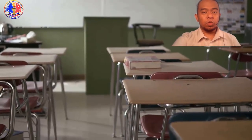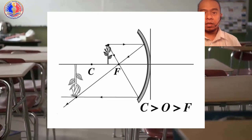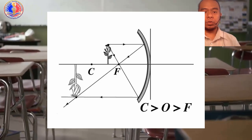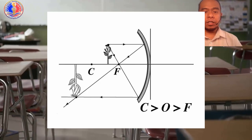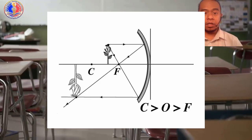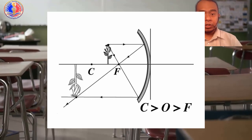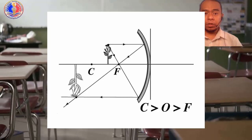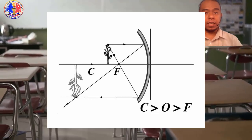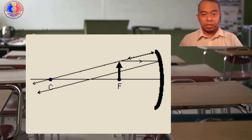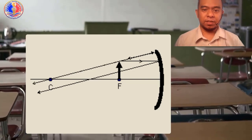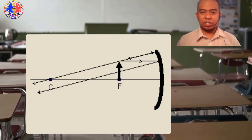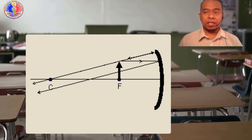How about if the object is between the focus and center of curvature? The image formed is beyond C, and the size of the image is bigger than the object. Of course, the nature is real and inverted. How about if the position of the object is at F? The image form is at infinity. It is highly enlarged, and it is real and inverted.